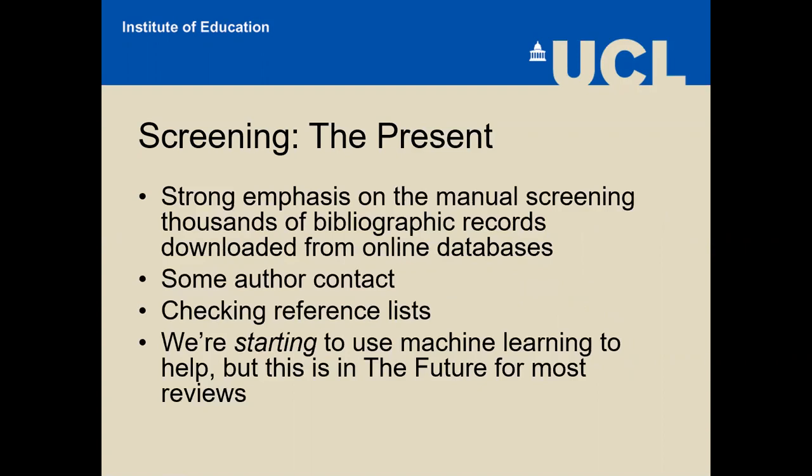The present in terms of screening is very different, with a strong emphasis on the manual screening of thousands of bibliographic records. I estimated not so long ago that there are around 30,000 systematic reviews indexed in the Epistemonikos database over the last couple of years. If you take the average number of studies screened to be around 3,000 — which it is for Cochrane reviews — that equates to a staggering 75 million records screened in order to write those reviews. With double screening recommended by MECIR standards, up to 150 million records are being screened every year by systematic reviewers, and that's just in health.